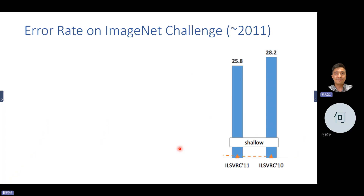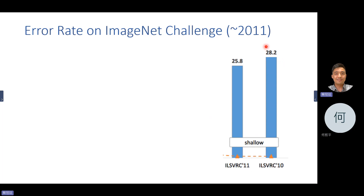Then they held a competition called the ImageNet challenge. The chart shows the error rate — lower is better. So if you calculate 100 minus 28.2, you get about 71.8% accuracy. The error rate gradually reduced using SVM models during that era — around the time I was studying my PhD. I spent a lot of time getting familiar with SVM.